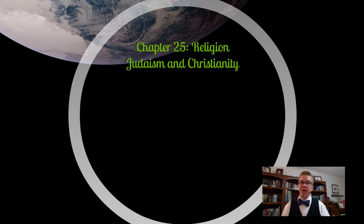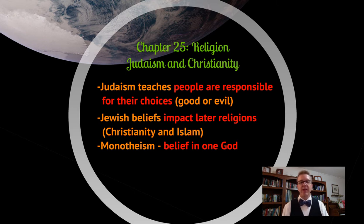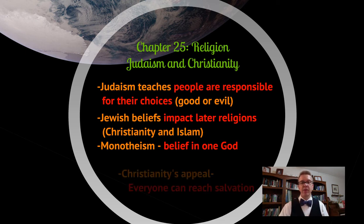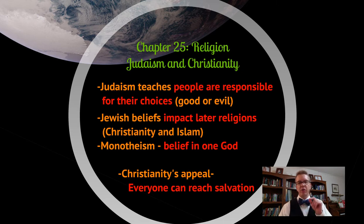Looking at religions in chapter 25 — Judaism and Christianity. Judaism is important because it teaches that people are responsible for their own choices, whether good or evil — not the gods. Their beliefs in God and personal responsibility influenced both Christianity and Islam, as did their belief in monotheism, belief in one god. Christianity had great appeal beyond Judaism because anyone who believes can reach salvation, not just those following specific rituals. This was especially appealing during the fall of the Roman Empire, when Greek and Roman gods didn't seem sufficient, and a simple message — God loves you, follow these things, and you can reach salvation — resonated.